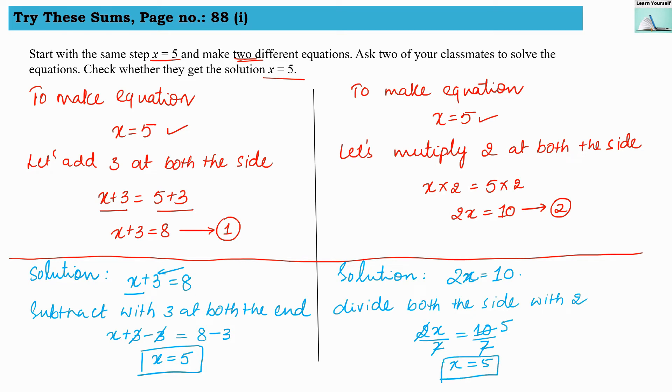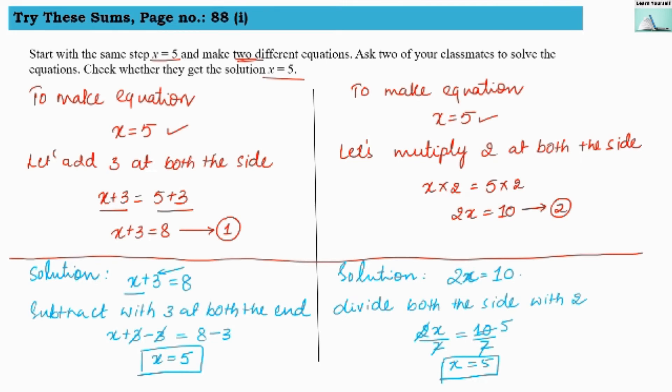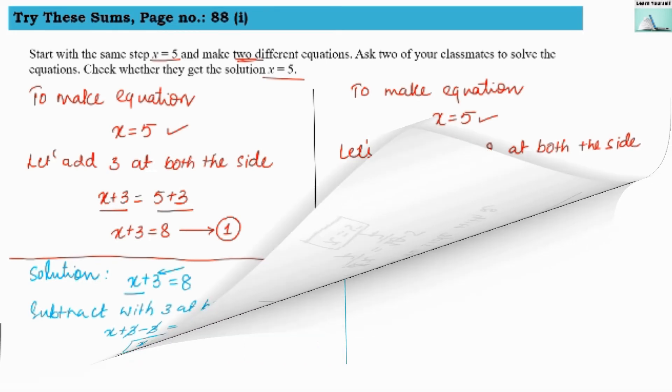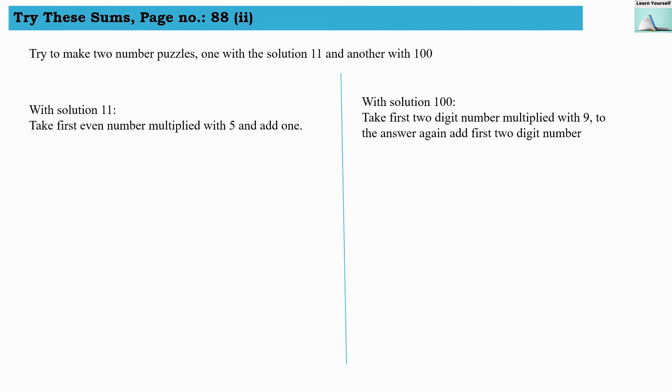Try This Sums page number 88, problem 2. Try to make two number puzzles - one with solution 11 and another with solution 100. We are going to make two puzzles. Puzzle number 1, solution should be 11, and puzzle number 2, the solution or answer will be 100.